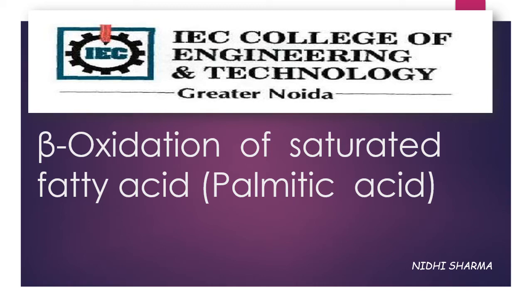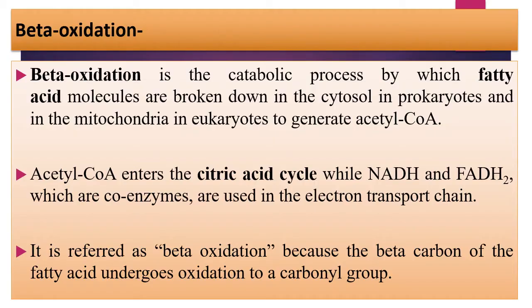In this video, I will explain the beta oxidation pathway of saturated fatty acid, like palmitic acid. Beta oxidation is the catabolic process by which fatty acid molecules are broken down in the cytosol in prokaryotes, and in the mitochondria in eukaryotes, to generate acetyl-CoA. Acetyl-CoA enters the citric acid cycle, while NADH and FADH2, which are coenzymes, are used in the electron transport chain. It is also referred to as beta oxidation because the beta carbon of the fatty acid undergoes oxidation to a carbonyl group.